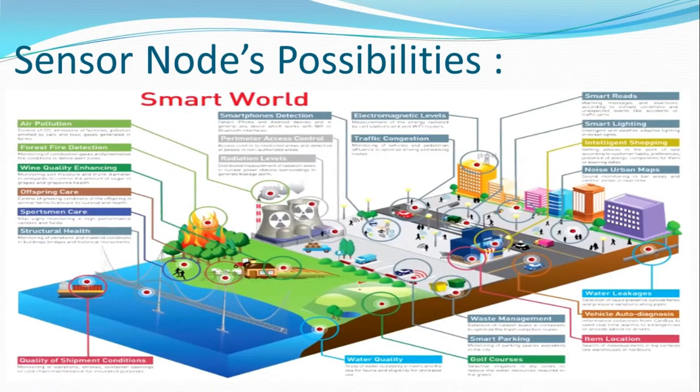The sensor node possibilities are endless. If we are talking about a smart world, then we have air pollution sensors, forest fire detection sensors, water sensors, smartphone detection sensors, noise urban sensors, lighting sensors, and waste management sensors. There are also lots of sensors like parking sensors, water supply sensors, and water quality checking sensors. Pollution sensors — lots of sensors are used in a smart world.